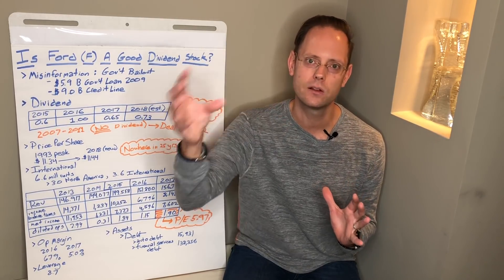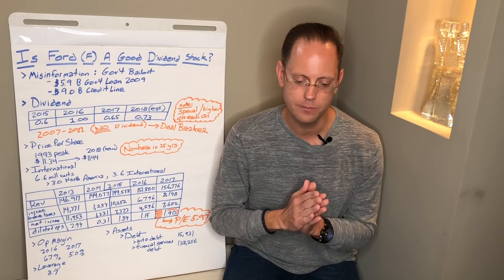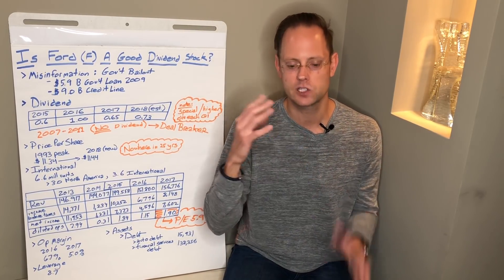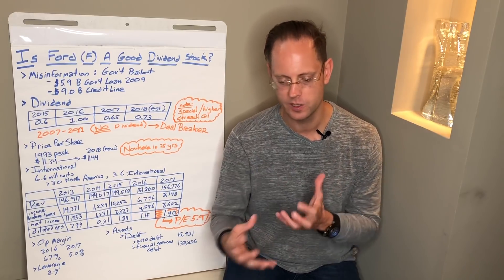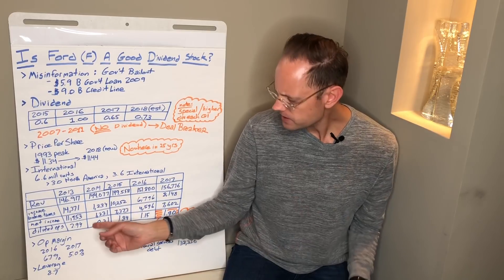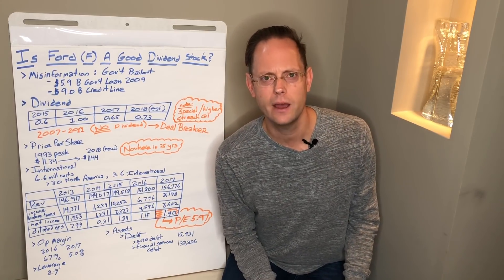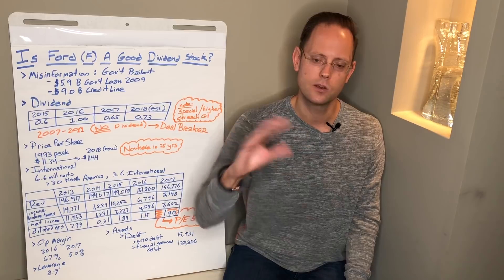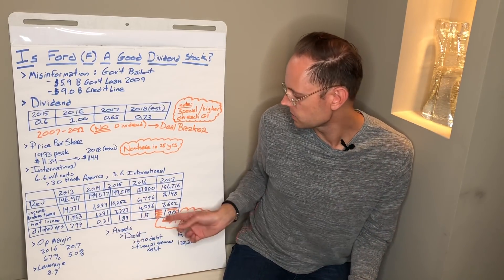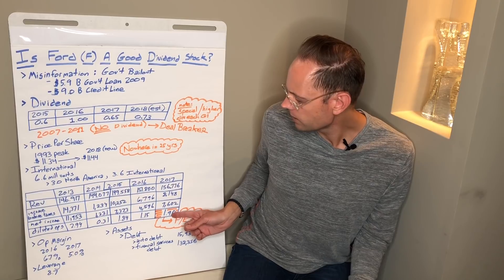And we're probably getting towards the tail end, in my opinion, of this good economy. At some point, we will have a correction. And there could even be a stock market correction, which would generally coincide with an economic correction or recession. Now, if this is what's happening during good times, during bad times, I imagine the EPS could be quite a bit more volatile, maybe even swing negative. And so that's something that concerns me.